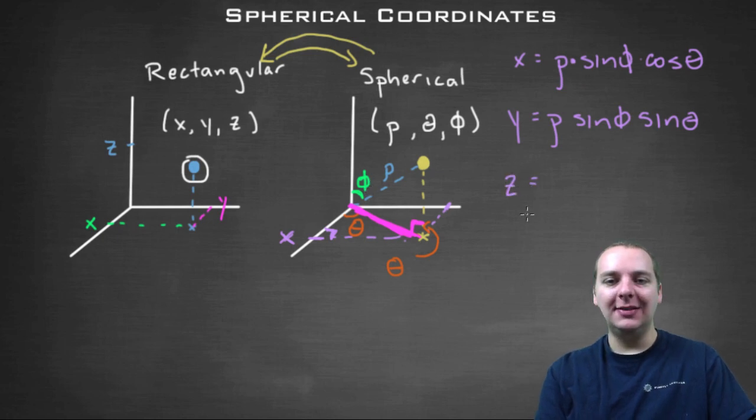Alright how about the z, how do you get z from all this mess? Well, I see the z value, z is right about here maybe. Here's z. Now z doesn't have anything to do with theta. Theta's in the x, y plane.